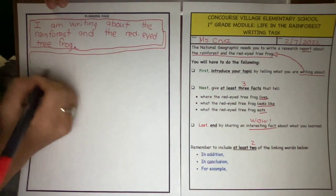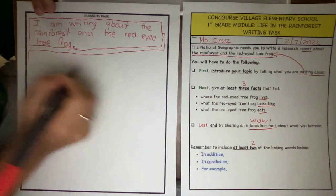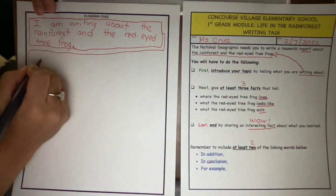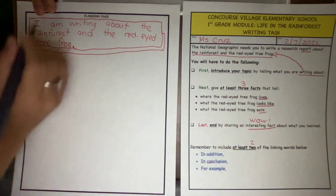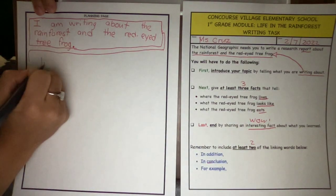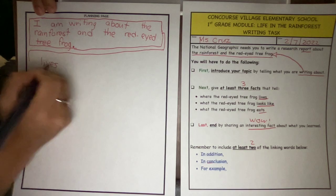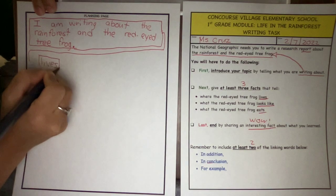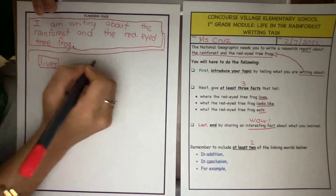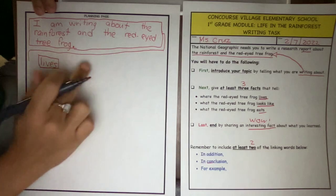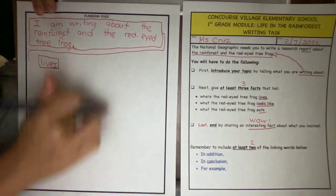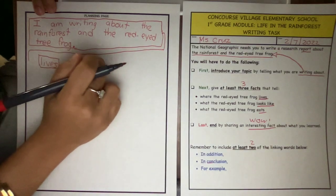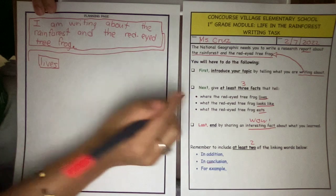I am going to have a box for where it lives. Make sure it is on this side of the paper. Lives — and you box it. I want to have in the middle of the paper, right here, what it looks like.